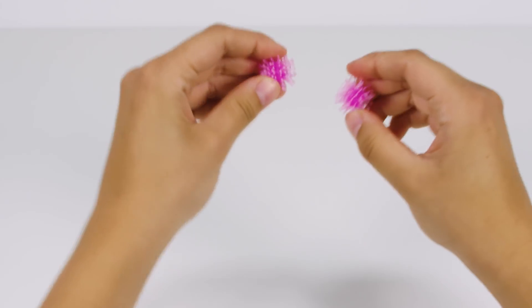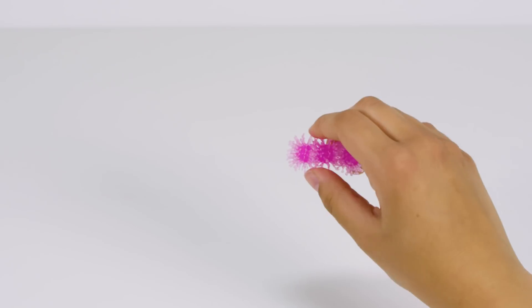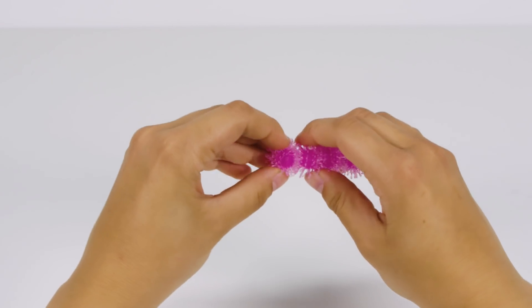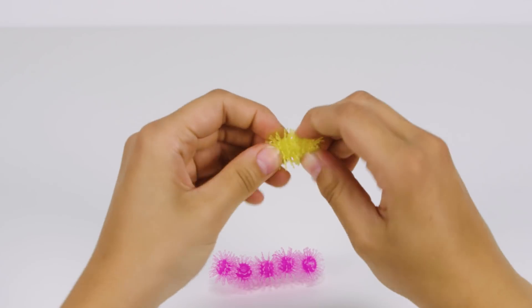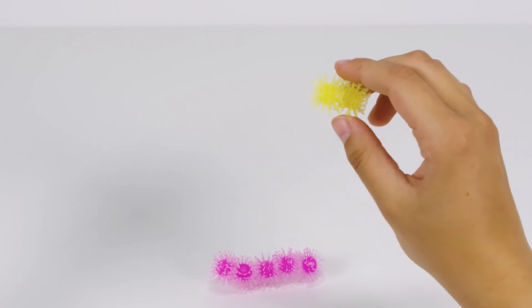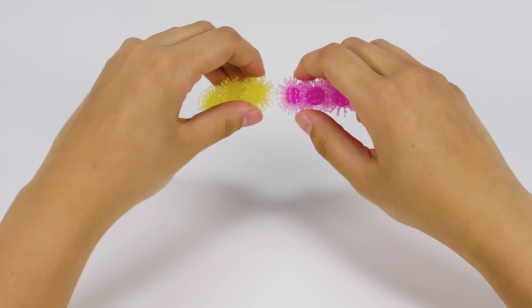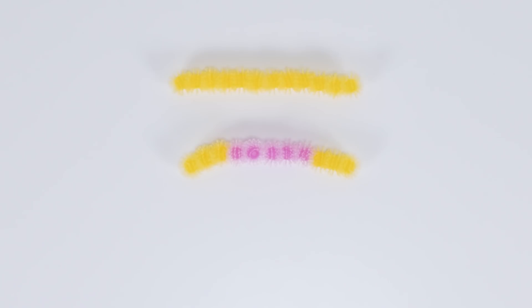Make a chain of five pink Crystal Bunchums, making sure the hole on the second Bunchum faces up. Add three yellow Crystal Bunchums to each end. Bunch the chains together, placing the pink and yellow chain in the middle.